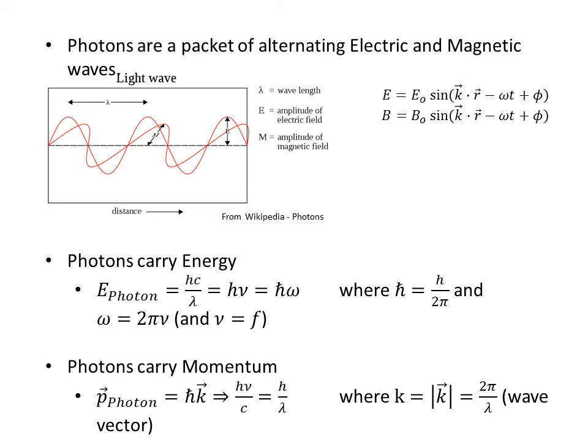So lambda nu, the wavelength times the angular frequency has to give, if we work this equation, would have to give us that our speed would be c.